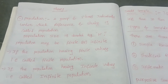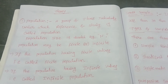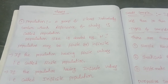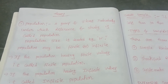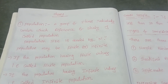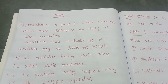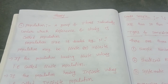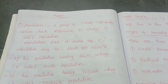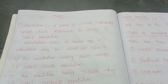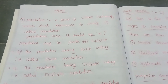Hello students. In this class I will explain one theory question. The first definition is population. Population means a group of items or individuals under which reference of study is called population. Population size is denoted by capital N.